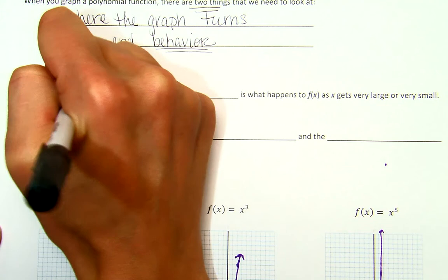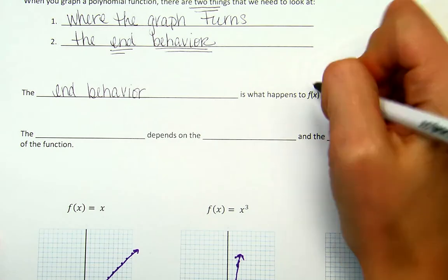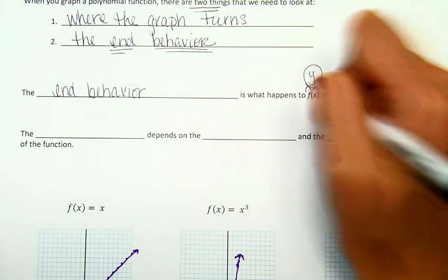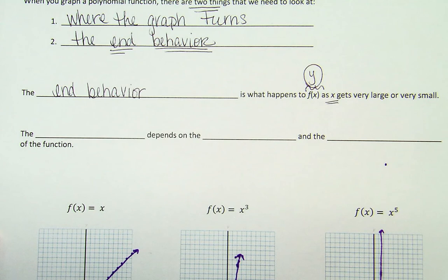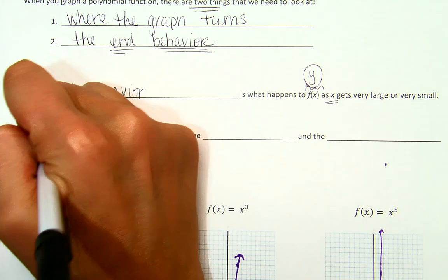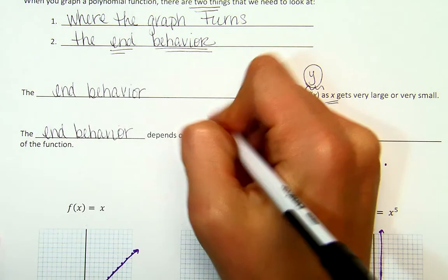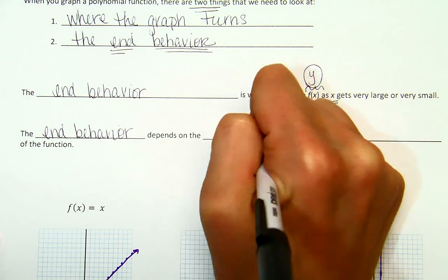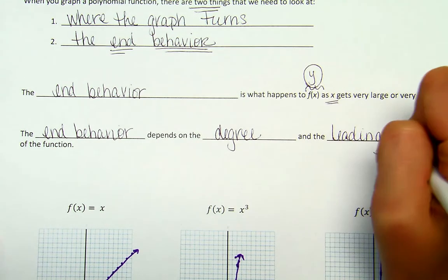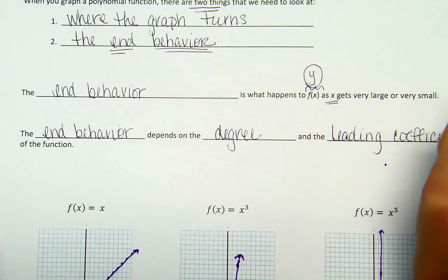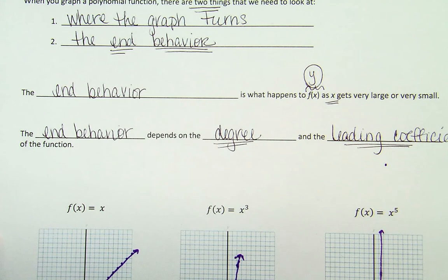Your end behavior is pretty self-explanatory. You're looking at the ends of your graph and how they're behaving. So your end behavior is what happens to your f(x), which you guys know to be fancy for your y value. What really happens to your y as your x gets very large or very small. Your end behavior depends on the degree of your polynomial function as well as your leading coefficient. That's why it's really important that you know what a degree is and how to find your leading coefficient, because they're going to actually help you determine your end behavior.